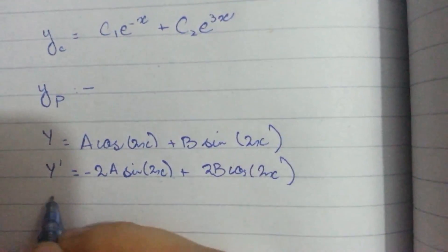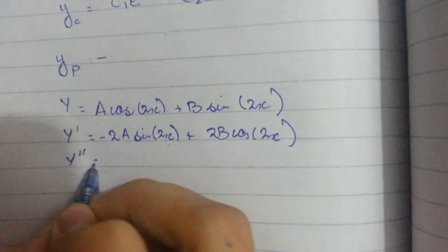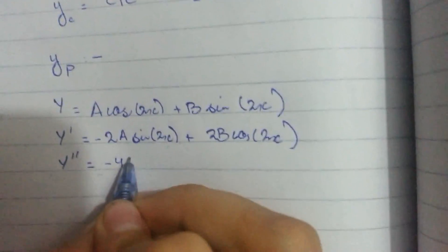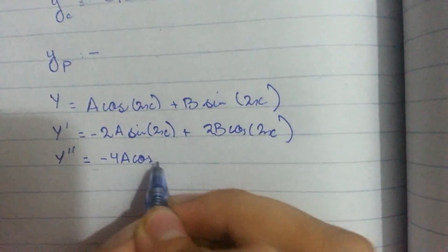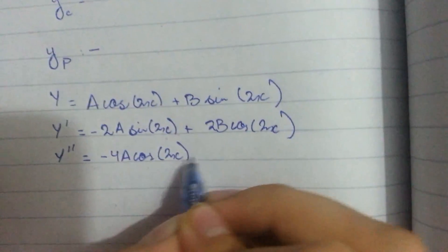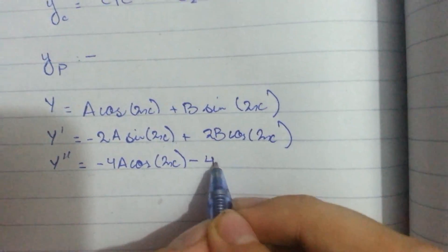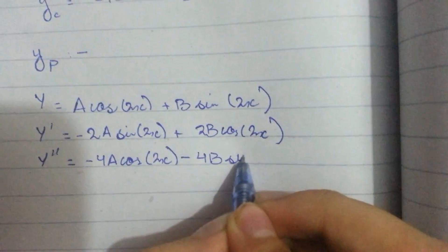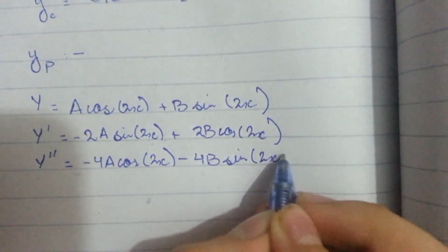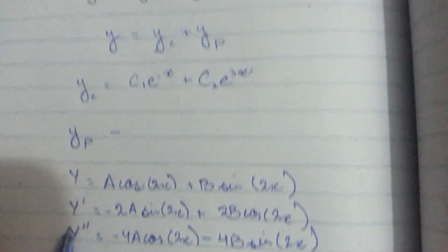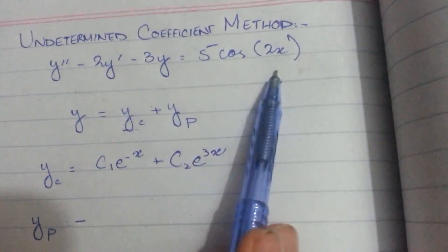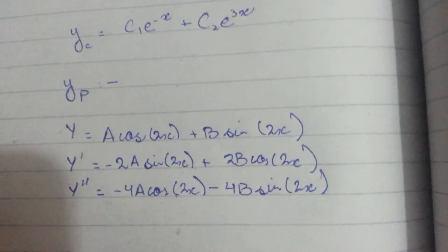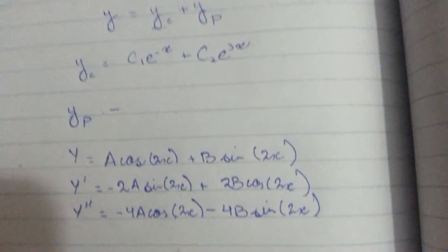Now we will take the second derivative of this which will be minus 4A cos 2x minus 4B sine 2x. Now we will substitute these values in this equation and then we will get the answer.